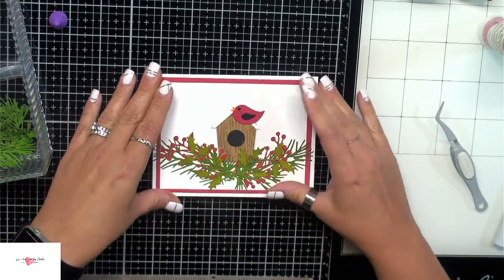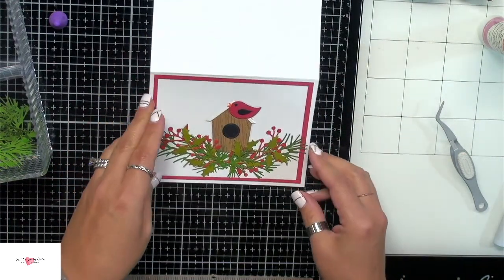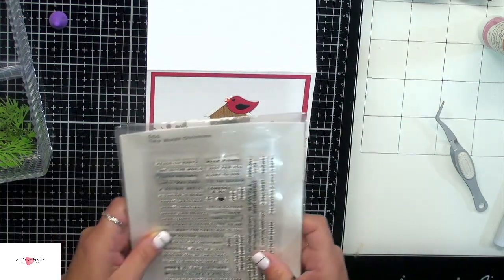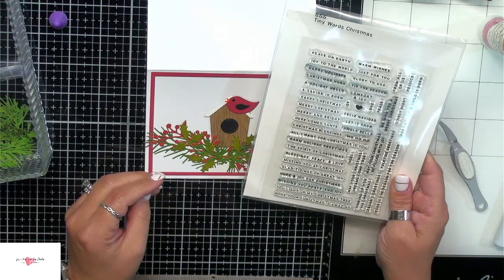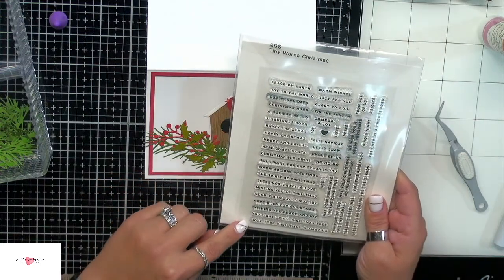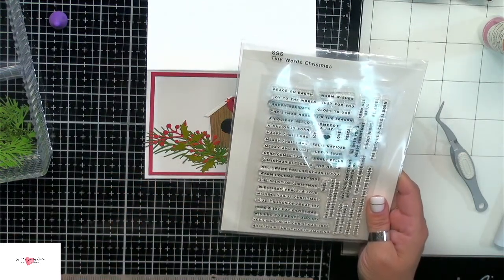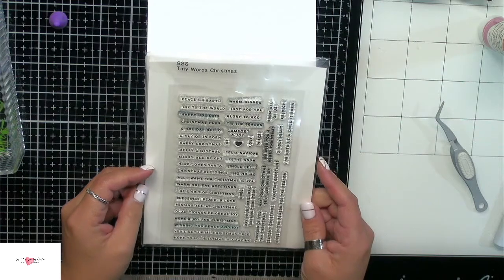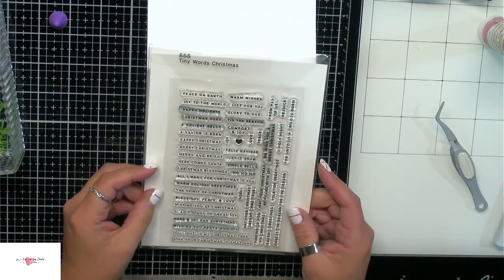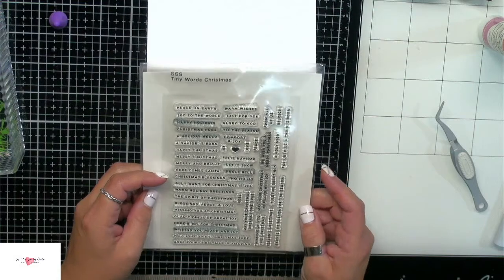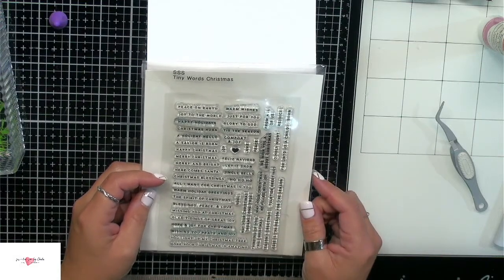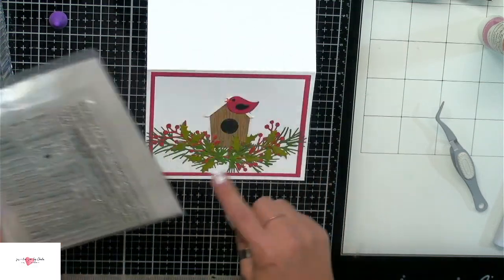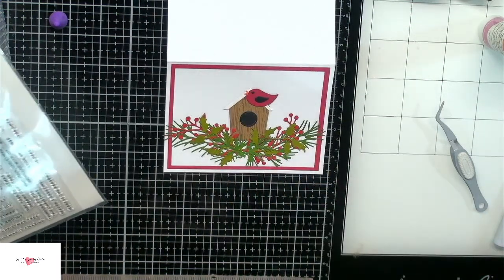And for the sentiment on my card, I'm not sure what I want on the front. I have these little tiny words, Christmas stamps from Simon Says Stamp. Unfortunately this set is not going to be available on Scrap and Stamp, but this is kind of the only small sentiments that I have. So let me go ahead, stamp this up and I will come back and show you what I have decided for the sentiment on the front of this card.